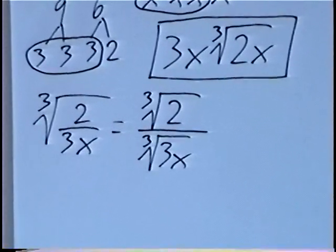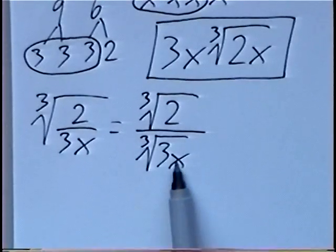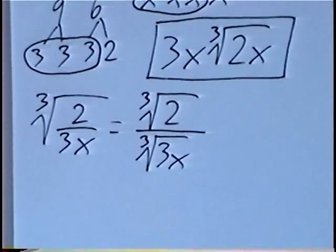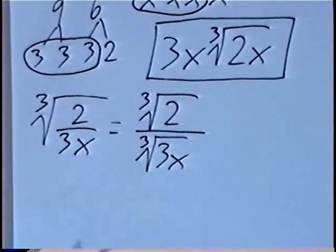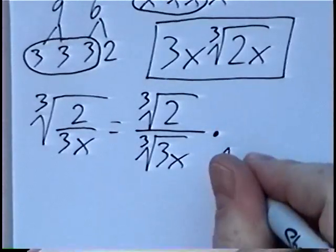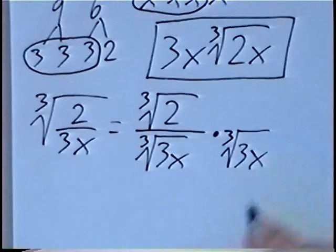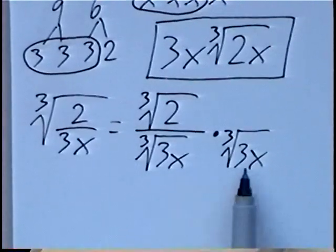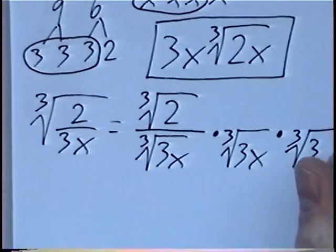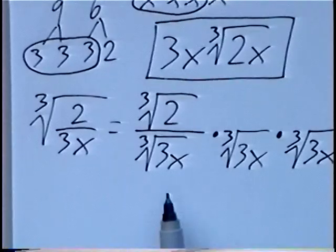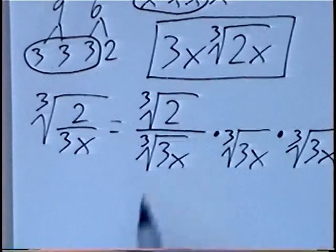Just like square roots, we cannot have radicals in the denominator of a fraction. So we have to multiply to cancel out the cube root. Since it's a cube root, we want 3 sets. We can multiply by the cube root of 3x, but since it's a cube root we want 3 sets total, which means we multiply twice by the cube root of 3x. By multiplying by 2 sets of 3x, we'll have 3 sets of 3x, which we can simplify.